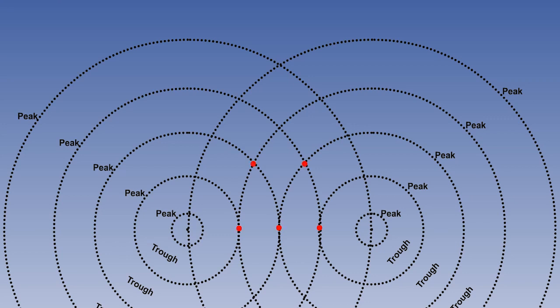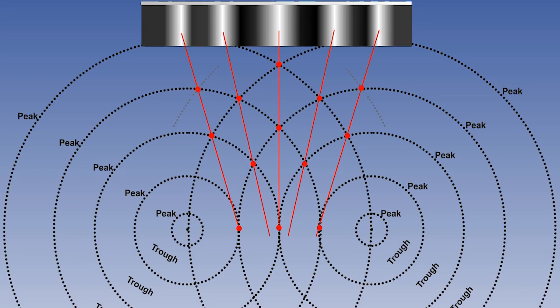Now imagine that this is light, not water. Where two peaks meet, there is a build-up of intensity, and in between it is darker. Now let the light fall onto a screen. We get a pattern like this.